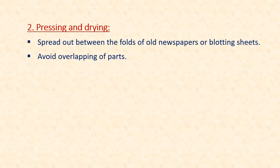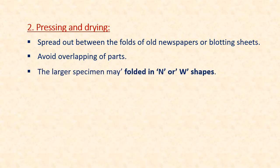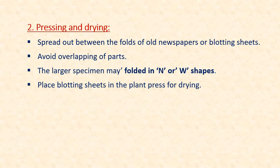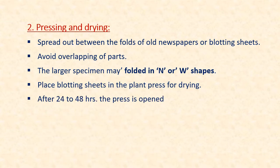The second step is pressing and drying of the specimens. The specimens are spread out between the folds of old newspapers or blotting sheets, avoiding overlapping of parts. Larger specimens may be folded in the form of N or W shapes. The blotting sheets with plant specimens should be placed in the plant press for drying. After 24 to 48 hours, the press is opened and the process is repeated for a week using fresh blotters.